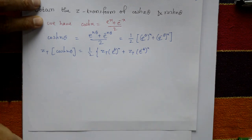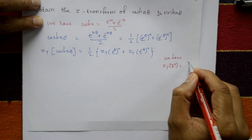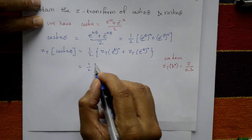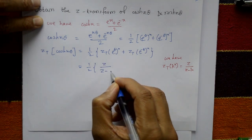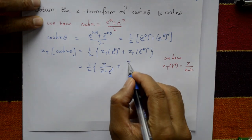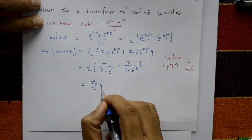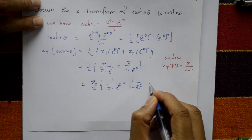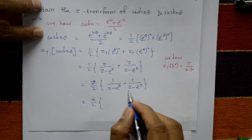We use the standard Z-transform formula: Z{k^n} = Z / (Z - k). Applying this, the first term gives Z / (Z - e^θ) with k = e^θ, and the second term gives Z / (Z - e^(-θ)). Taking Z common outside, we get Z/2 times [1/(Z - e^θ) + 1/(Z - e^(-θ))].